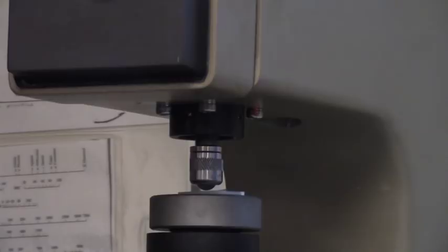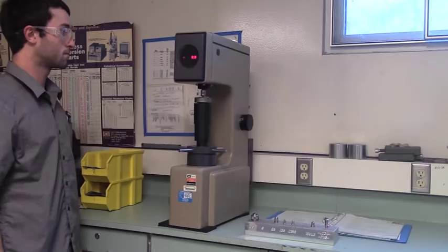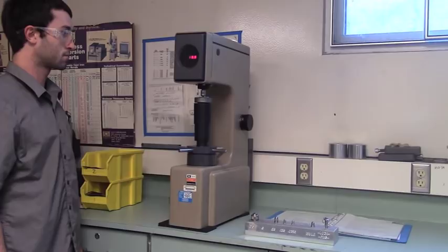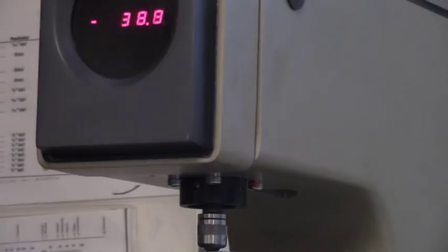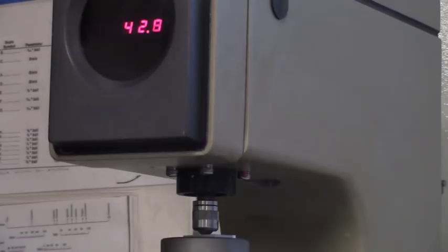Wait for the machine to cycle. As the machine cycle is run, the output will begin dropping in value to a negative number. It will then increase to a positive number and stop. If the machine does not go to a negative number, the cycle is done incorrectly. Once the number on the machine output has settled to a value, the cycle is done. This is the Rockwell hardness value that corresponds to your chosen scale.